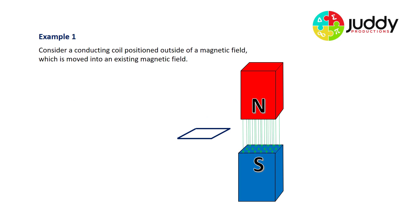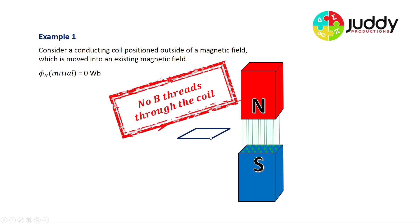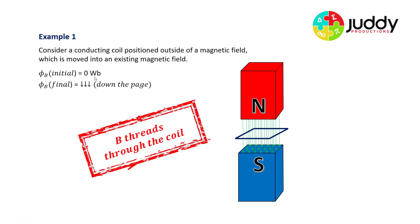Example number one: consider a conducting coil positioned outside of a magnetic field, which is moving into an existing magnetic field. Here we have our coil that's about to move into the magnetic field. In this initial position, there are no magnetic field lines threading through the coil, so our initial flux is zero weber. It moves into the magnetic field, and now we have magnetic field B threading through the coil. You can visually see the green lines moving from north to south, so now our final magnetic flux is down the page.